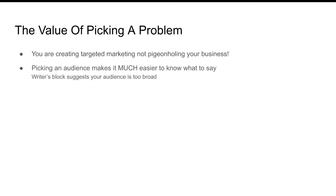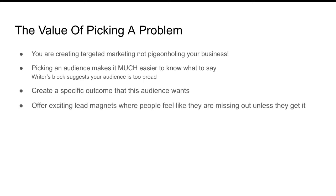Picking an audience makes it much easier to know what to say. So if you feel like you have writer's block and all you can come up with is some sort of financial incentive like a coupon to inspire people, it probably suggests the audience is too broad. Consider narrowing down your audience — that will often solve the whole problem. Now you know exactly what to say; in fact, you'll have lots of things to say. And then you can create a specific outcome that the audience wants. Once you pick the problem and know what the audience is, you now know what the outcome is going to be as well. And now you're offering exciting lead magnets where people feel like they're missing out unless they get what you're offering.